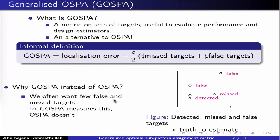Traditionally, multi-target tracking algorithms have been designed to miss as few targets as possible, while presenting as few false target estimates as possible in areas where there are no targets present. GASPA has been designed to reflect this performance, and informally the metric is the sum of a localization error for the detected targets, plus c over 2 times the total number of missed and false targets. The localization error is for pairs of true targets and target estimates that are sufficiently close to each other, whereas a target is considered to be missed if there is no corresponding estimate sufficiently close to it. Similarly, a target estimate is said to be a false target if there is no corresponding true target sufficiently close to it.